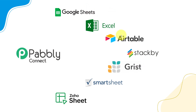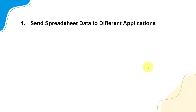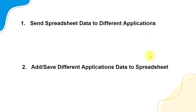So when you have a lot of applications integrated inside Pabbly Connect, let me show you what exactly you can automate. Either you can send your spreadsheet data to a different application, or you can save and add data from different applications to your spreadsheet.